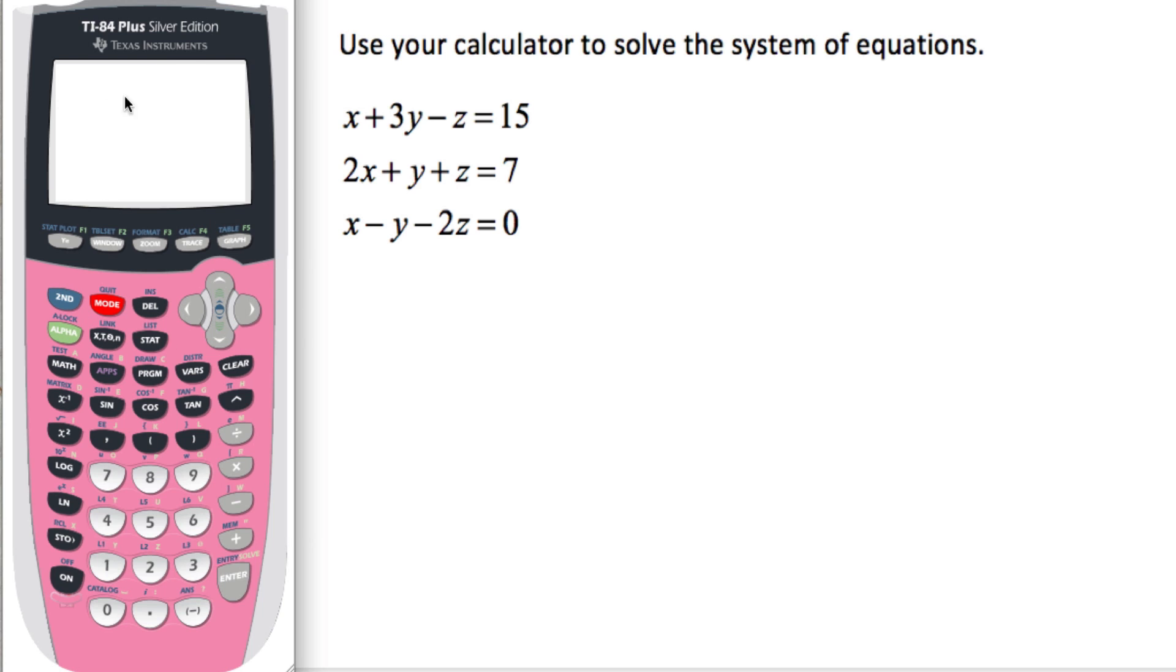All right, so then go quit. You can see here. Go second matrix again. Go over to math. Push up. And we need to go to B here, R-R-E-F. Push enter. R-R-E-F stands for row reduction echelon form.